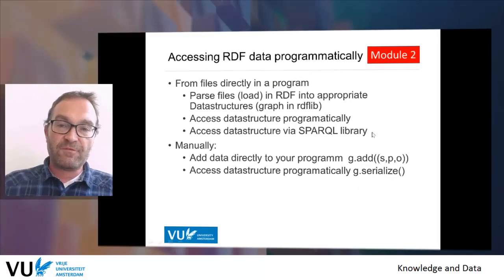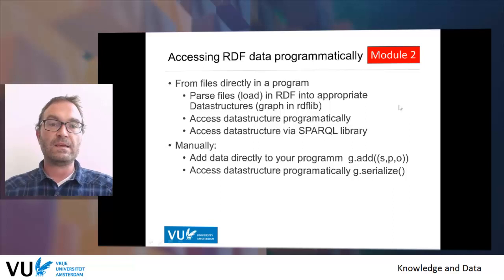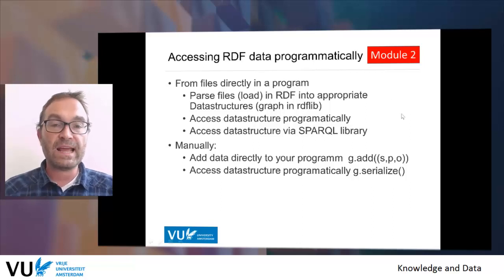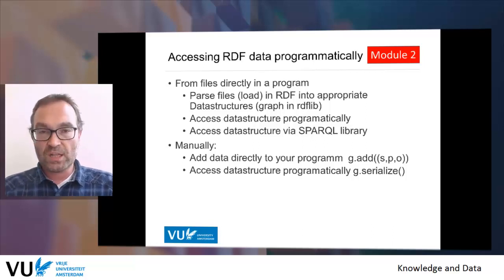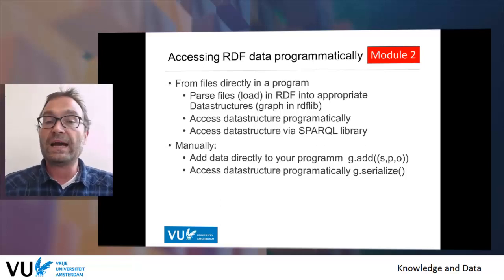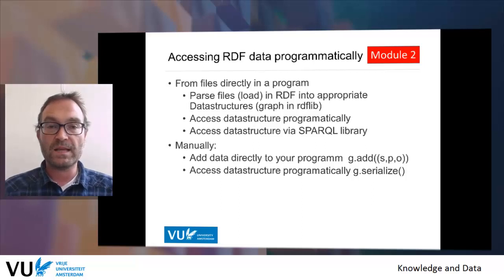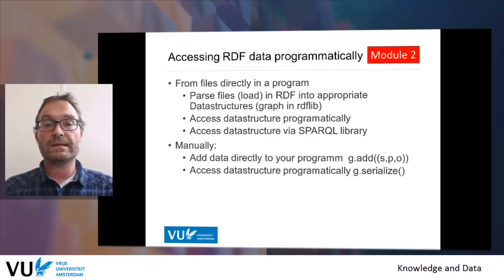When we have published data, we also want to access it. In module two, you already did part of this — you load files directly into your Python program. These Turtle files are loaded into appropriate RDF data structures. In RDFlib, this is called a graph, and then you can manipulate the data in this graph data structure in an efficient and effective way. Basically, you access the data structures in a programmatic way. You can also access the data structure via SPARQL.